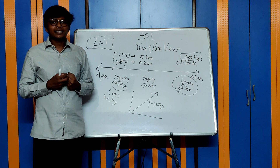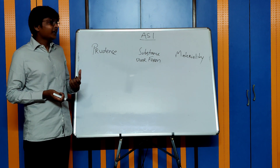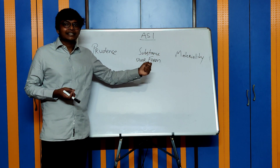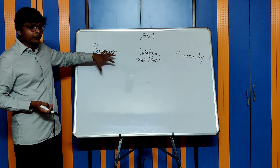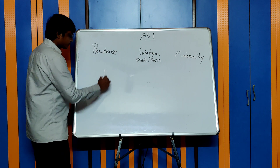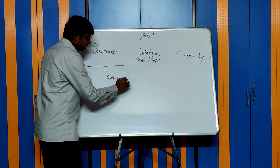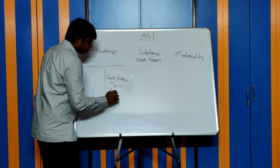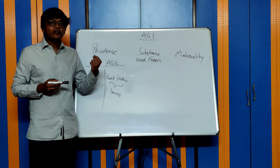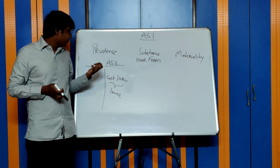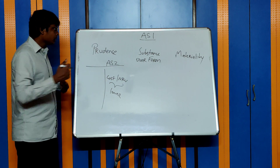Now let us discuss the three secondary criteria relevant for selecting an accounting policy. First, let me explain the concept of prudence. Inventory is valued at lower of cost or NRV — whichever is lower — as per AS2. What prudence says is: account for all known future losses, but do not account for future gains.